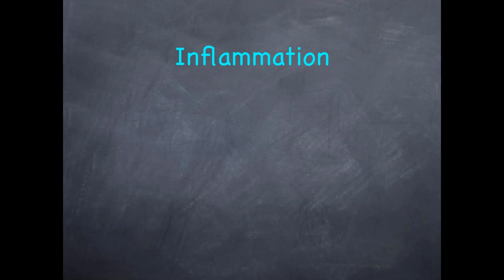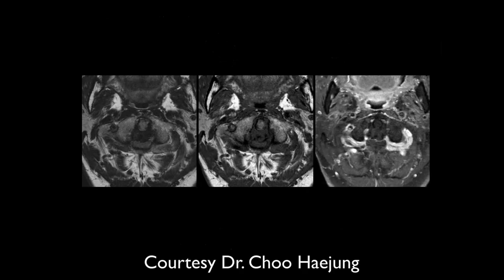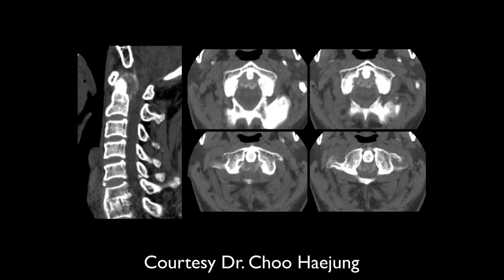Let's talk about inflammatory changes of the cervical spine. There's some thickening posterior to the dens and some narrowing of the canal at that level — this could be synovial thickening. Rheumatoid doesn't look like this, and this is non-enhanced, so you can have calcified synovial processes.